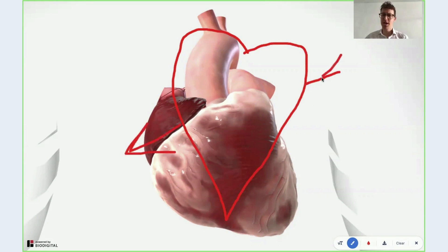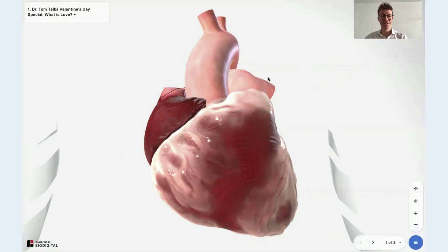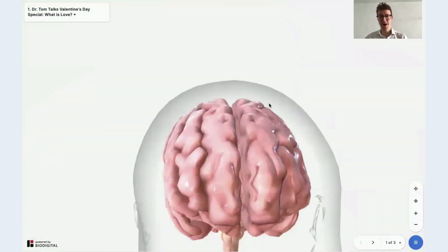Of course, it all starts here in the heart, and here is Cupid's arrow going through it. Actually, it doesn't start in the heart. It starts up here in the brain.